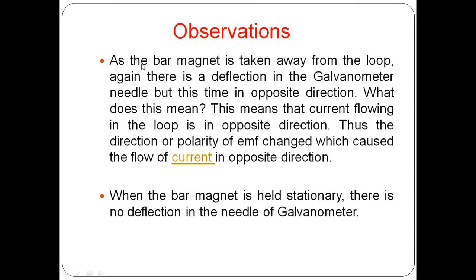As the bar magnet is taken away from the loop, there is a deflection of the galvanometer needle, but this time in the opposite direction. This simply means that the direction of induced EMF has changed, and due to this change in direction of EMF, the current must flow in the opposite direction. The next observation is that whenever we held the bar magnet stationary, there was no deflection in the voltmeter. This means that if there is no change in the magnetic flux through the coil, then there will be no EMF induced.